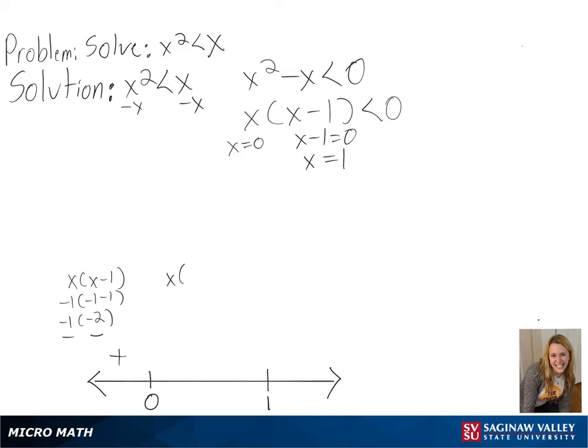We can then use a half in between our numbers, and we get a negative times a positive or a negative number.